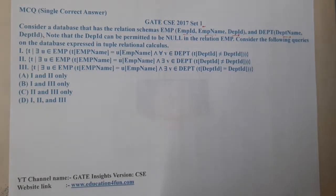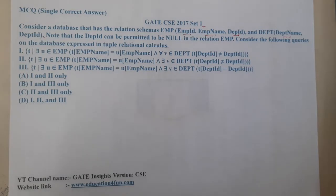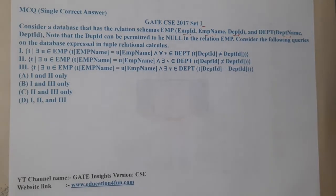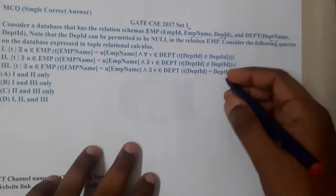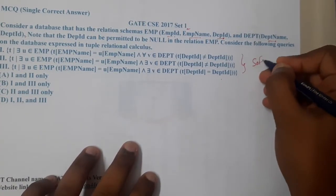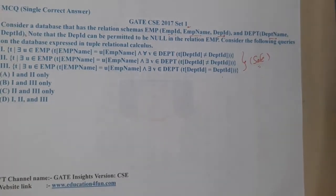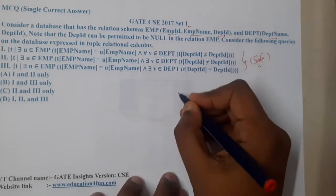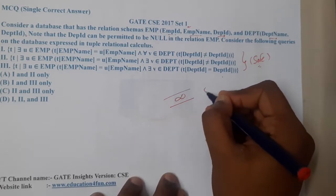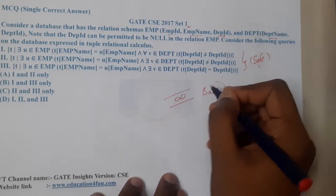Consider the following queries expressed in tuple relational calculus. They are asking which of the following three queries are safe. When we check with respect to safe statements, if none of these statements are leading to an infinite result, then we can say that they are safe.